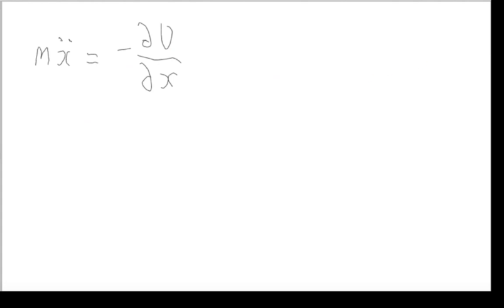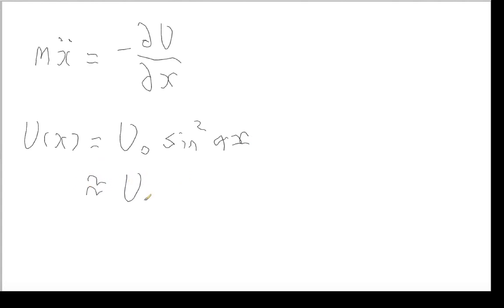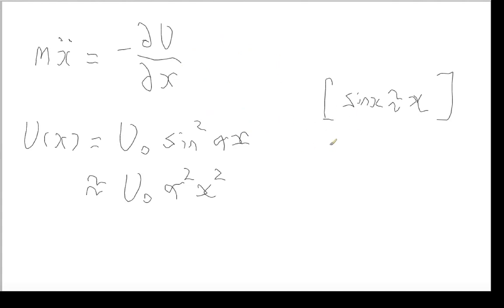We also need to know how to expand the potential with the small angle approximation. Our potential is U(x) = U₀ sin²(αx). We can use the small angle approximation for sine: sine of αx becomes just αx when x is small, since we're oscillating about the equilibrium point. Squaring that gives α²x².